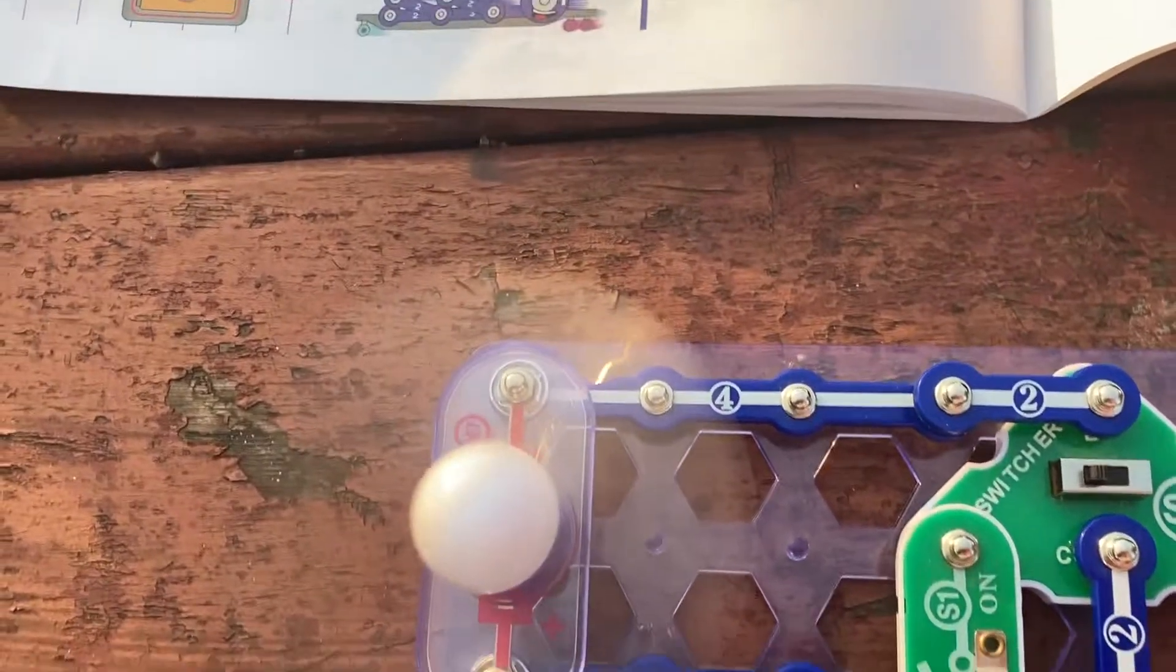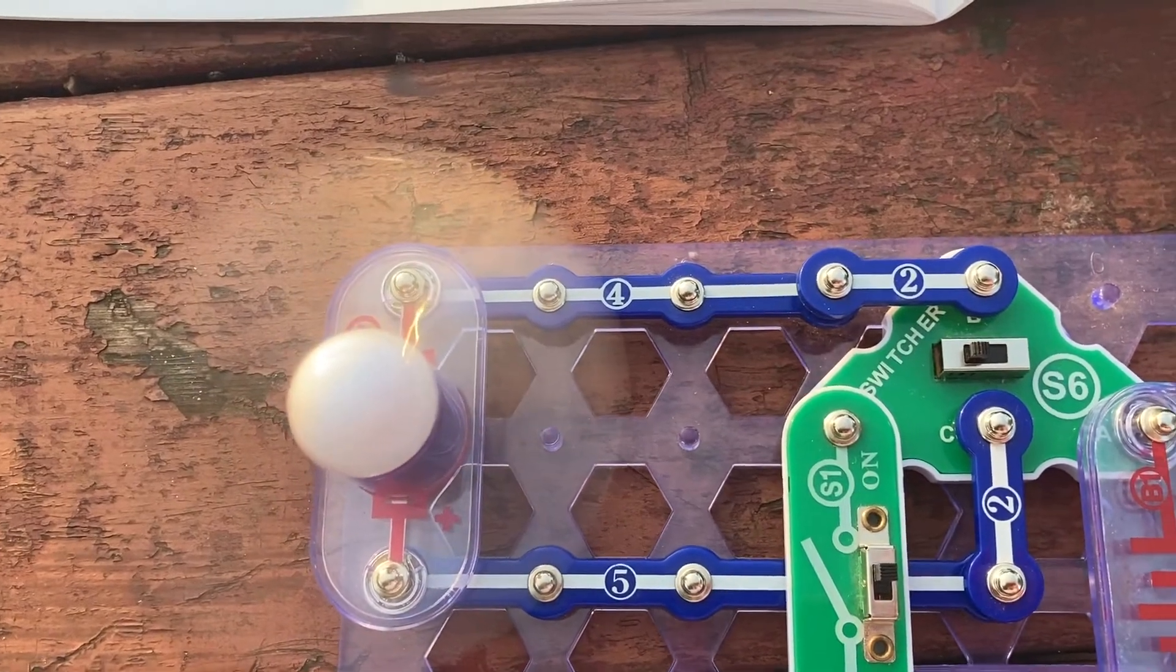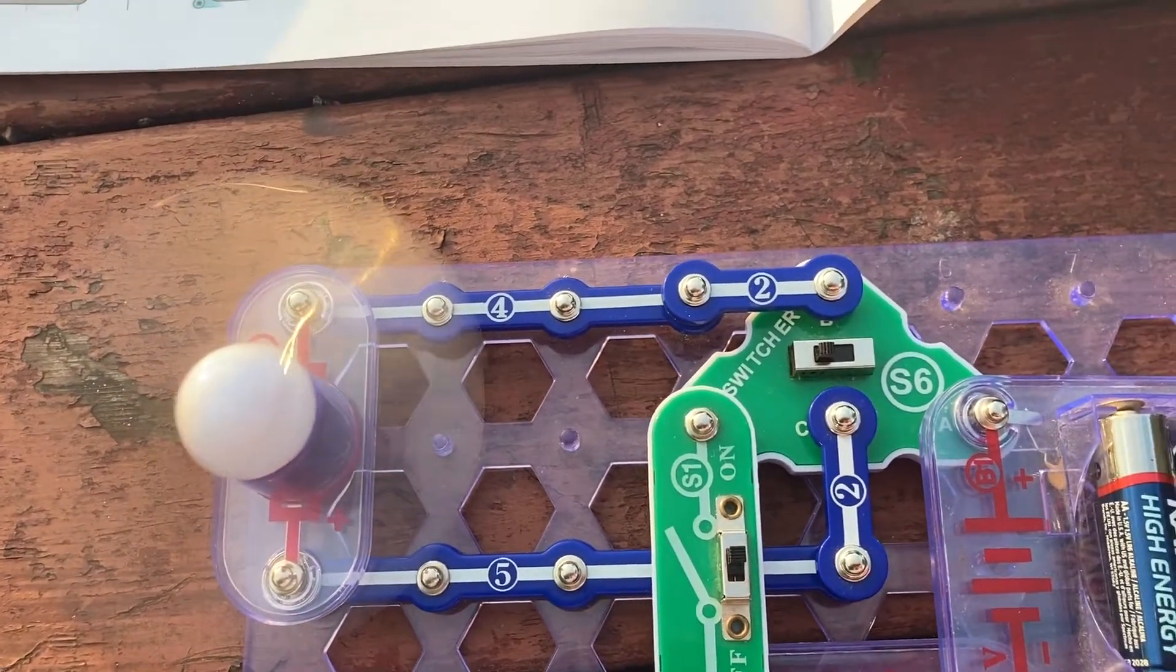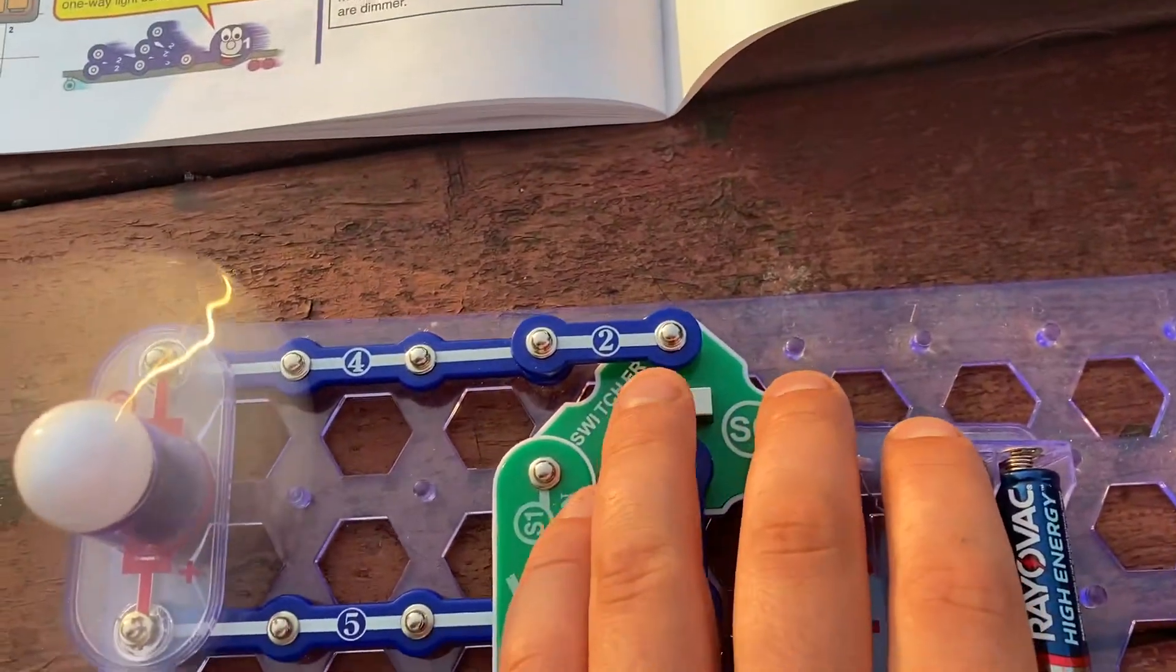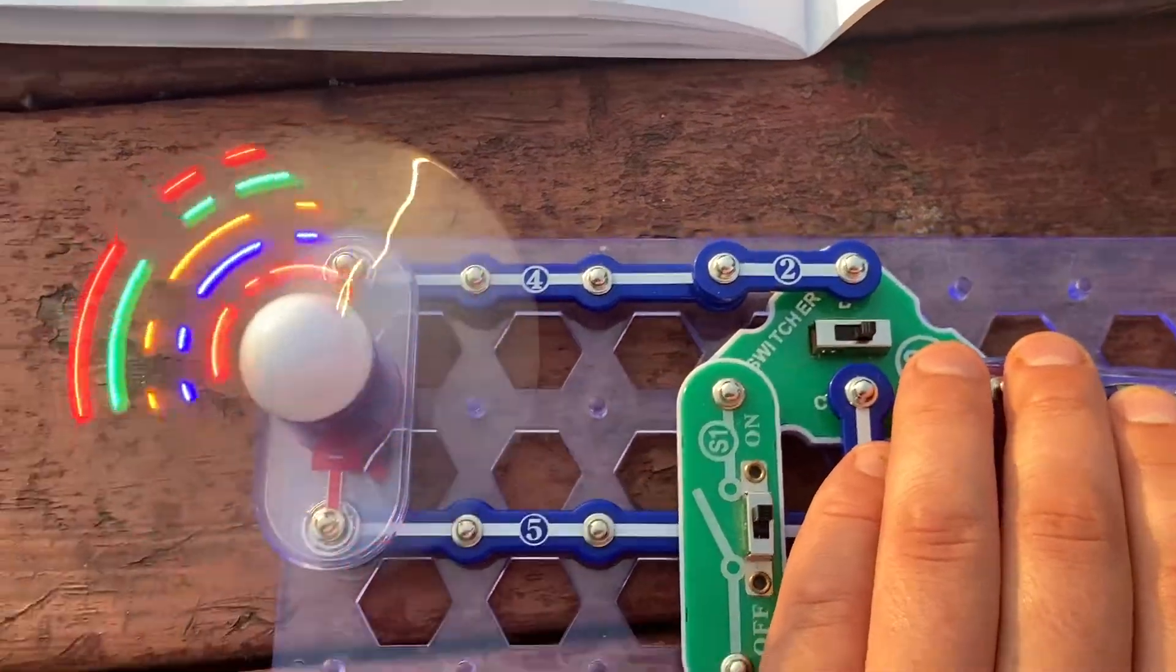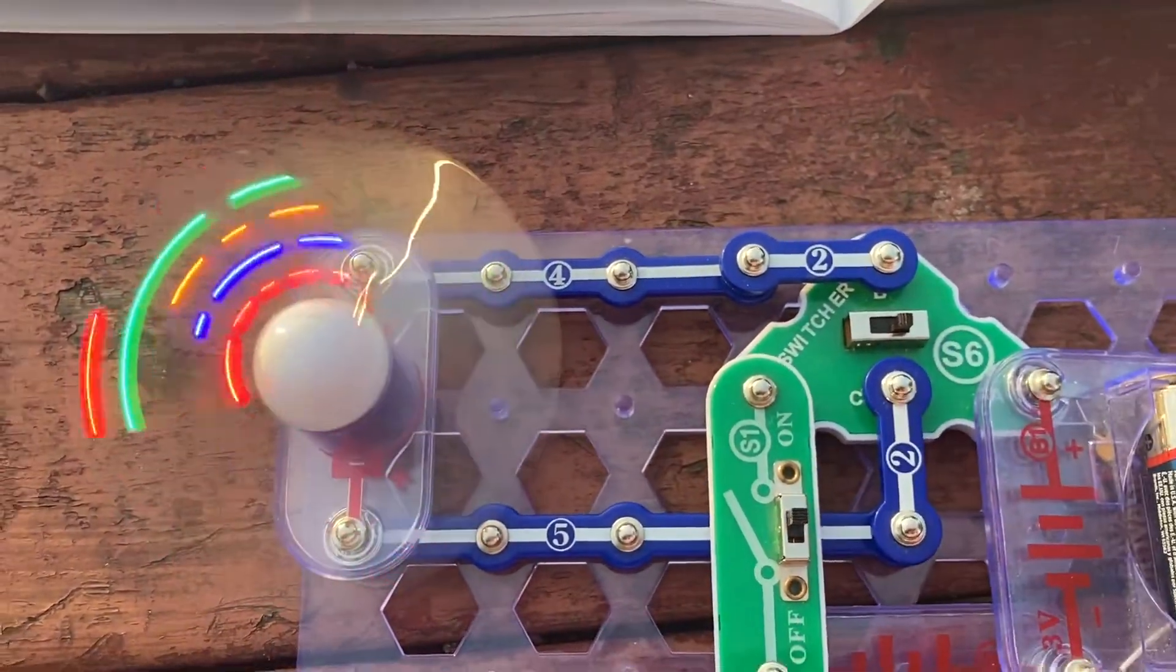That's because current can only flow through them in one direction, although the motor itself works regardless of the direction that current is flowing. Move the switcher back to the right and all the LEDs come on again.